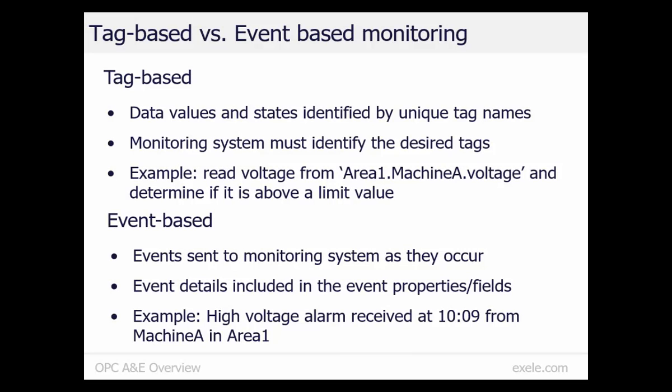In the process and automation world, there are two main types of monitoring systems. In a tag-based monitoring system, each measurement or state is identified by a unique tag name. The monitoring system can create a list of tags to monitor, and the current values can be polled or sent to the monitor. For measurement data, the system can determine if the data value falls within a desired range. In an event-based monitoring system, the monitor receives events about the process as they occur. Event details can include properties such as what happened and when. The monitoring system may filter out unwanted events based on the event properties. OPC Alarm & Events can be used for an event-based monitoring system.